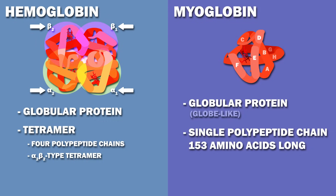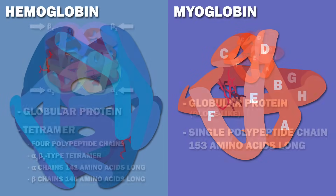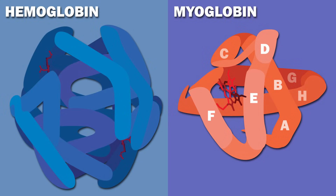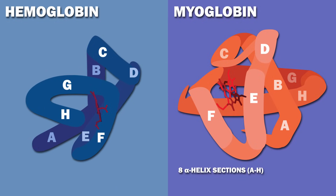Each of hemoglobin's four subunits is very similar to the polypeptide chain making up myoglobin. The alpha chains are 141 amino acids long, while the beta chains are 146 amino acids long. The myoglobin polypeptide chain consists of eight alpha helix sections, denoted A to H, and each polypeptide chain of the four hemoglobin subunits also consists of these eight alpha helix sections.